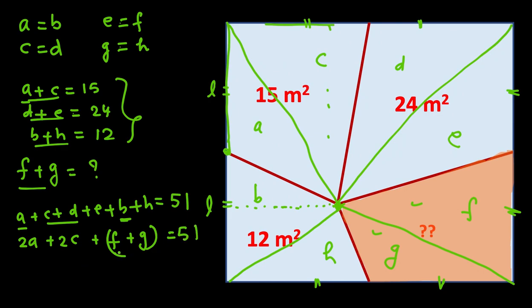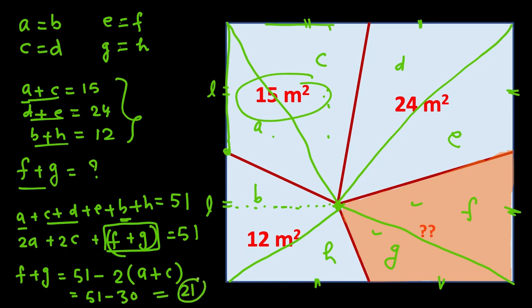Now you see F plus G. This is the required area which we need to calculate. So keep it in the left side. Send everything to the right. So F plus G is equal to 51 minus 2 times, I take 2 common here, A plus C. And what is A plus C? It's 15. So 2 times 15 is 30. So 51 minus 30 which is equal to 21. So this area will be 21.